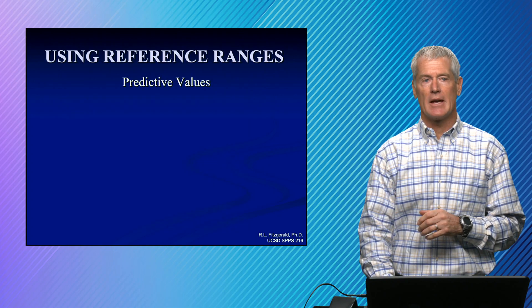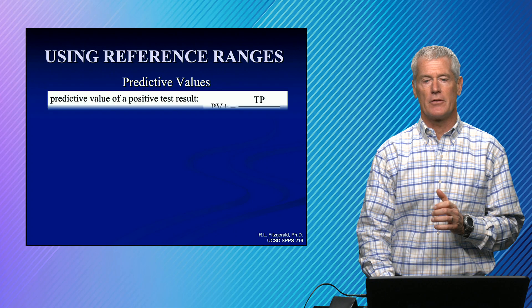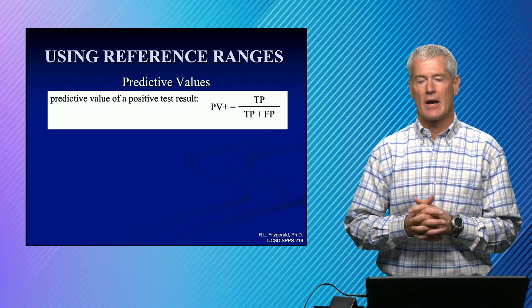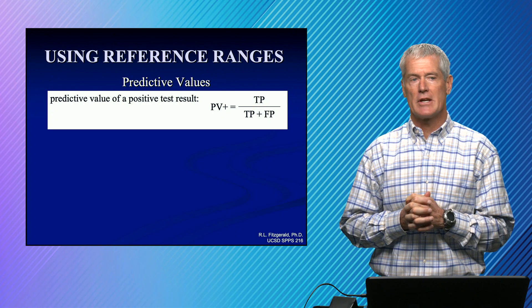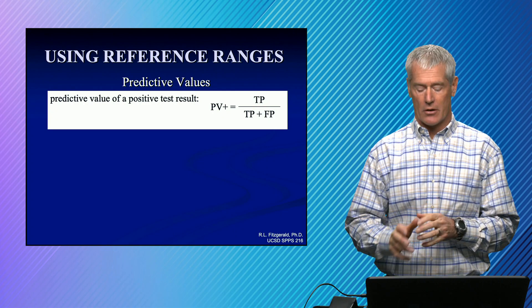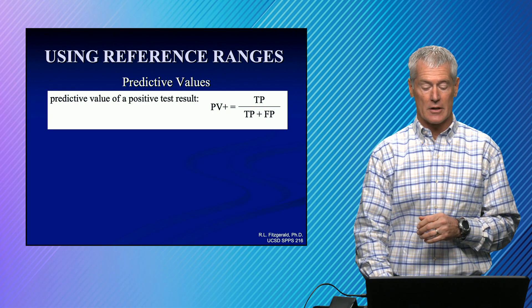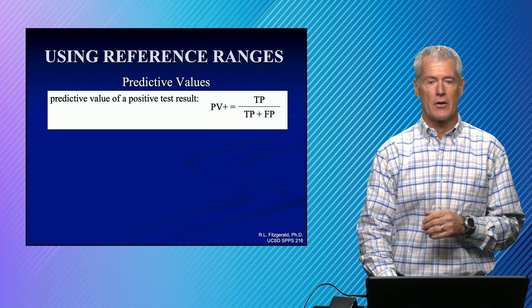Predictive values, again, depend on the prevalence of the disease. And predictive values really is the percentage, a positive predictive value is the percentage of positive results that are correct. So that would be true positives over true positives plus false positives.